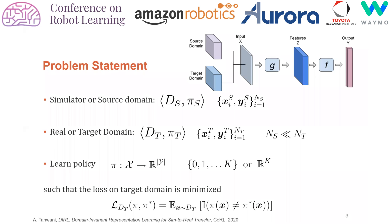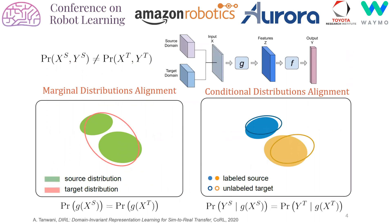Formally, we analyze the situation with two domains: one corresponding to the simulator or the source domain with loss of label examples, and the other corresponding to the real or target domain with a few label examples. We seek to learn the policy such that the empirical error on the target domain is minimized. Commonly used domain adaptation approaches learn an invariant feature transformation by aligning the marginal distributions across domains, implicitly assuming that the conditional distributions of the transformed features also remain similar across domains. However, this creates ambiguity in class alignment that can result in negative transfer to a new domain.